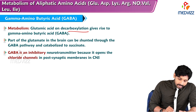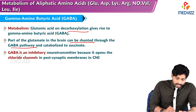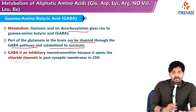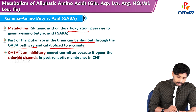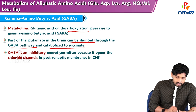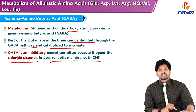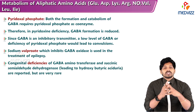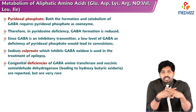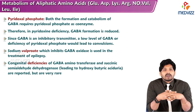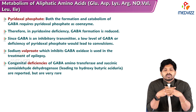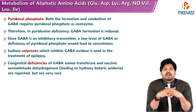Part of the glutamate in the brain can be shunted through the GABA pathway and catabolized to succinate, which enters the gluconeogenic pathway. GABA is an inhibitory neurotransmitter because it opens chloride channels in post-synaptic membranes in the central nervous system. Both the formation and catabolism of GABA require pyridoxal phosphate (PLP).